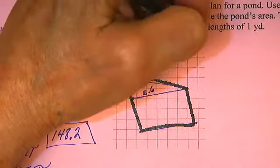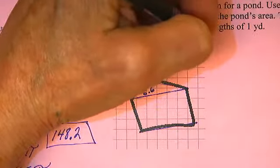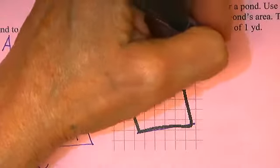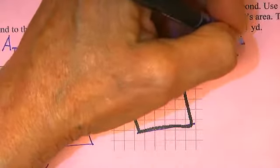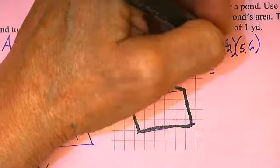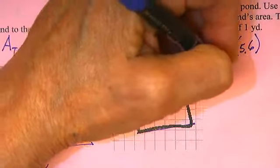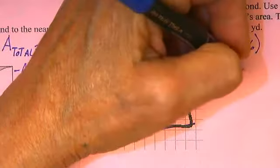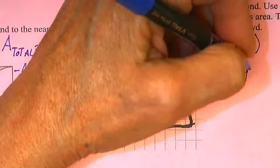The area of the triangle is one half times 2 times 5.6. Half of 2 is 1, so I am going to call the area of the triangle about 5.6 square yards.